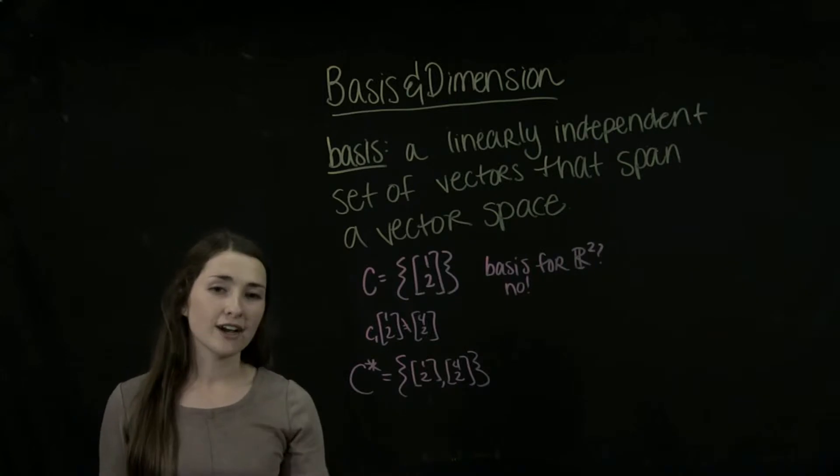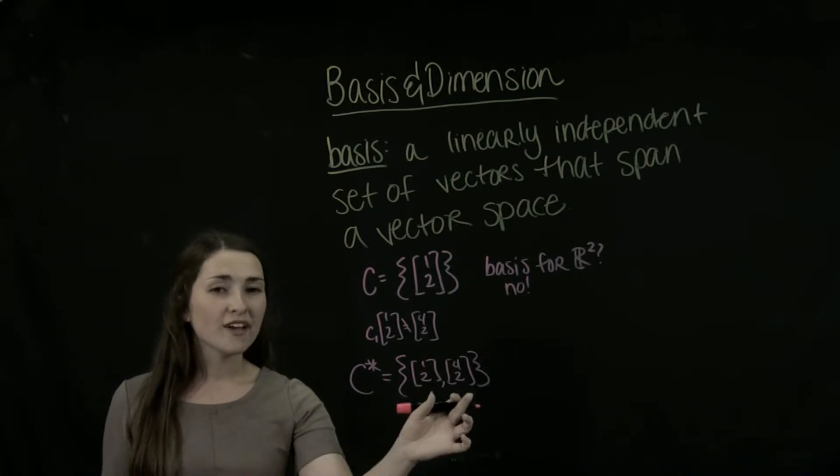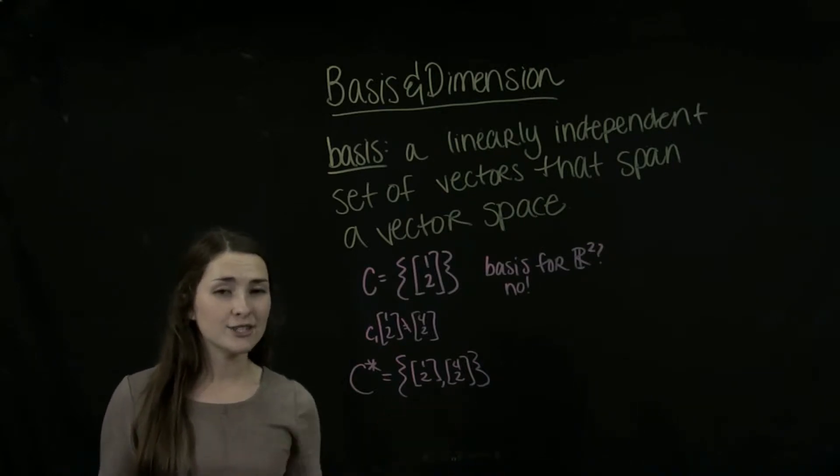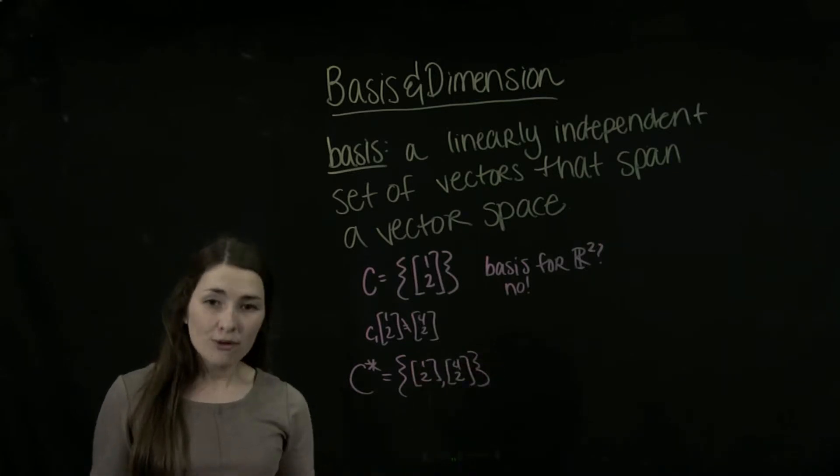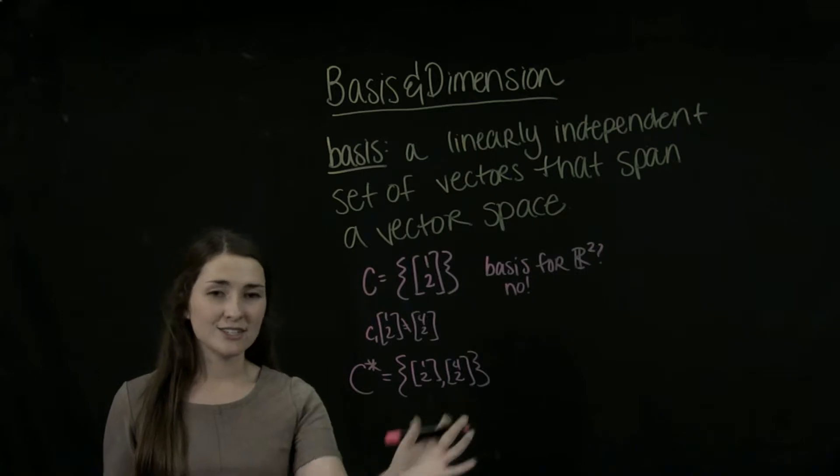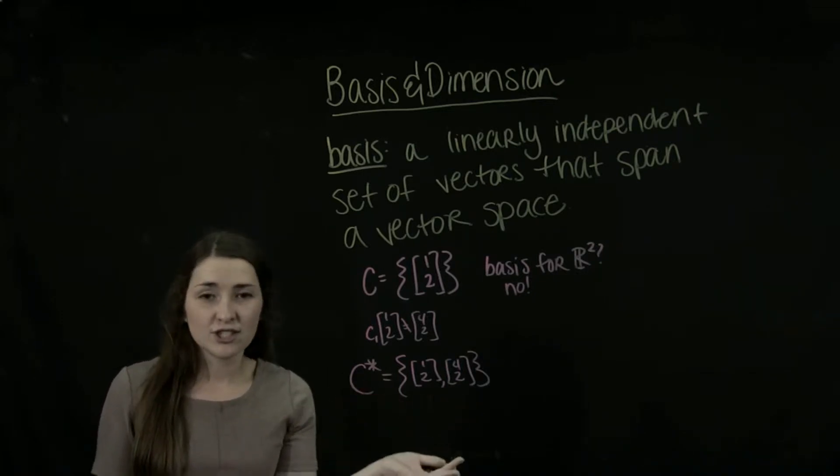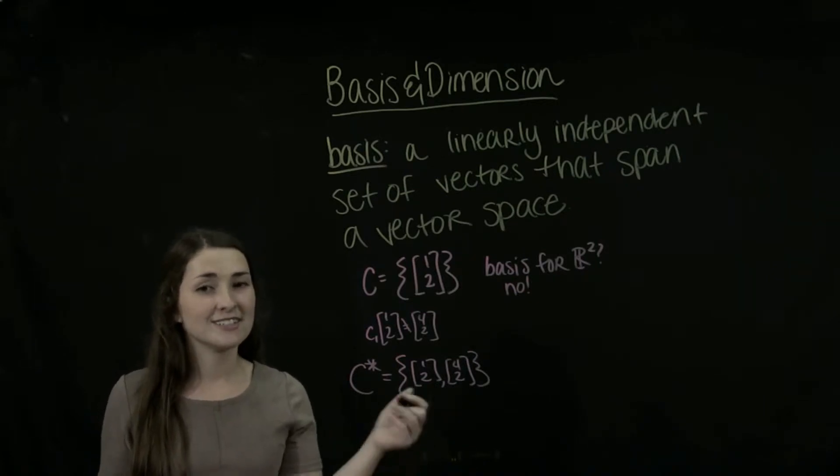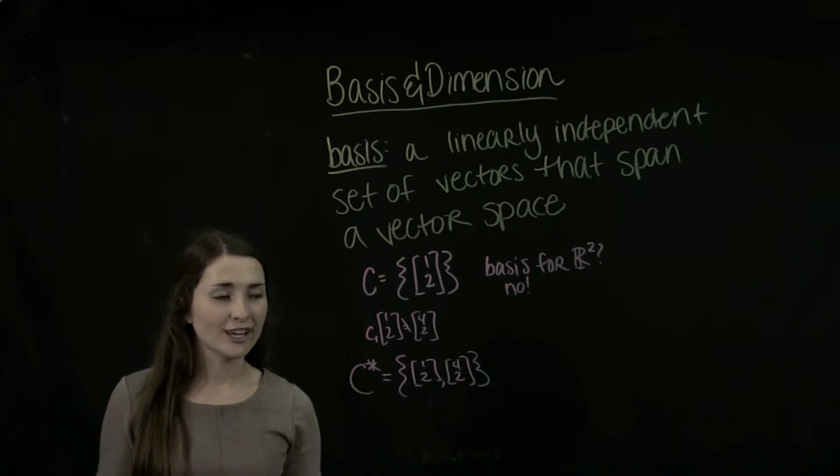Because these two vectors are linearly independent. And when we try to find a linear combination of these two vectors for any vector in R2, we will be successful. You can try that yourself by putting this into an augmented matrix, augmented with just a generic vector, XY. And you'll see that you can get conditions on C1 and C2 so that we can find a linear combination for any vector in R2.